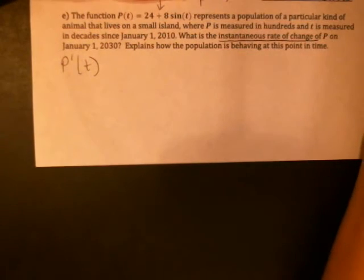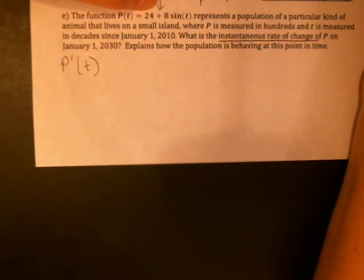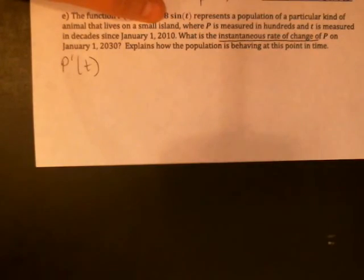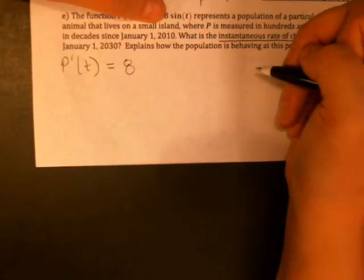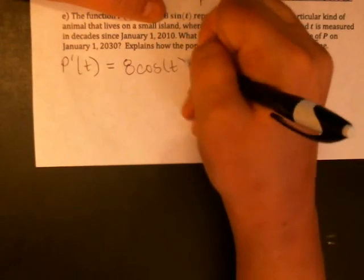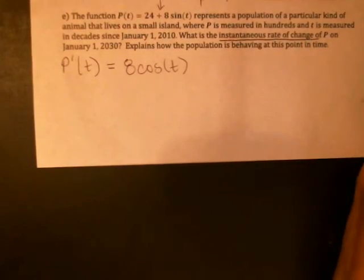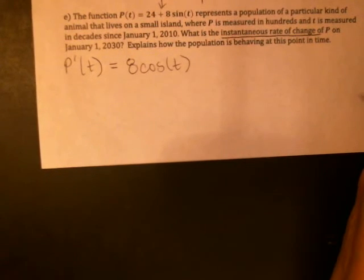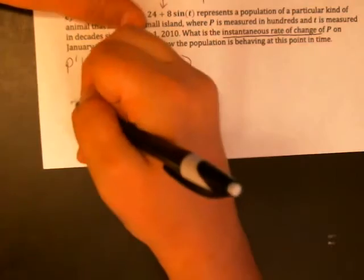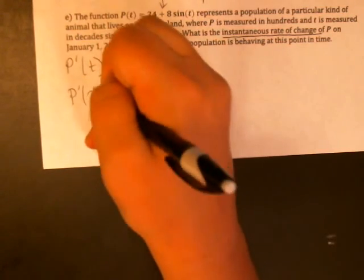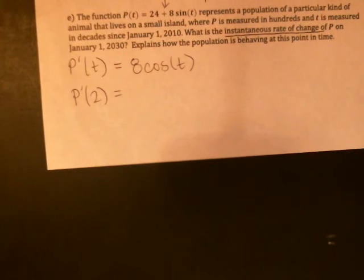So this is a sum. The derivative of the 24 is zero, so that's kind of nice. So we actually only end up looking at the 8 sine t. The 8 is a constant multiple, so it'll hang out. Derivative of sine is cosine t. So I get a nice simple derivative function. I'm interested in what's happening on January 1st, 2030. And since t is measured in decades, I would say that what I'm really looking for there is p prime of 2. Back to my trusty phone calculator for now. Do not follow my example. I'm not going to let you use phone calculators on the test. Bring a regular one.